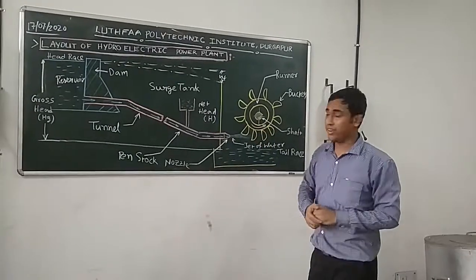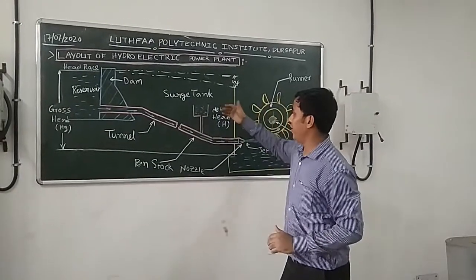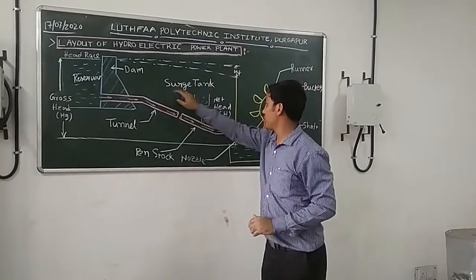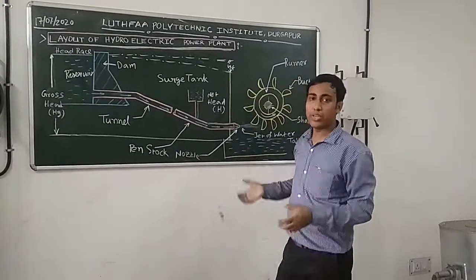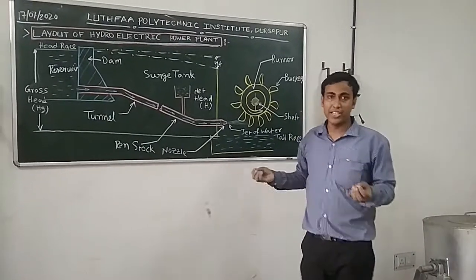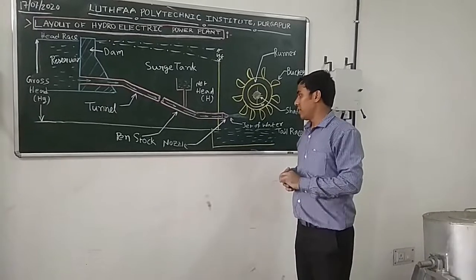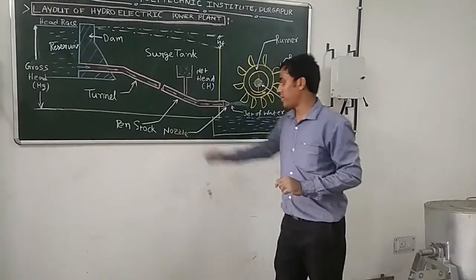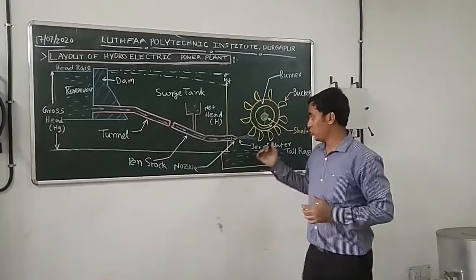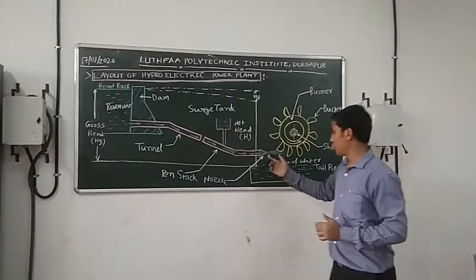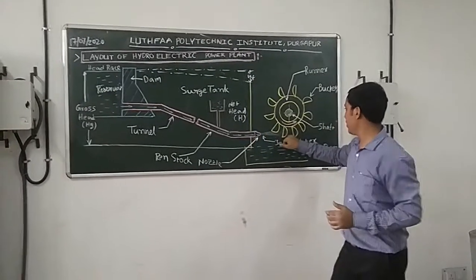Some friction loss is there in the machine and some friction loss is also there in our penstock. Here you can see a tank is attached which is called a surge tank, which shows the net head — the net head which is actually used as energy for electrical energy. This net head can be shown in the surge tank. The nozzle is used to increase the velocity of the jet. Nozzle is attached in front of the penstock where the jet actually comes and strikes on the bucket.